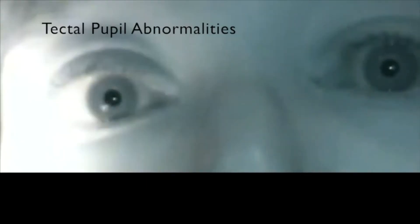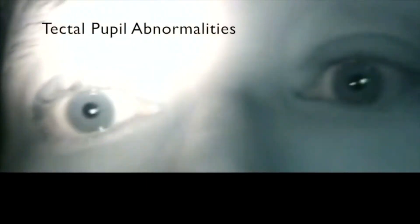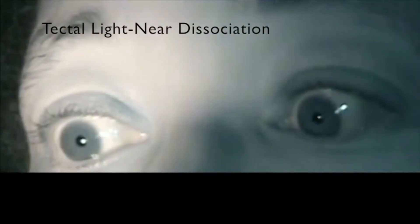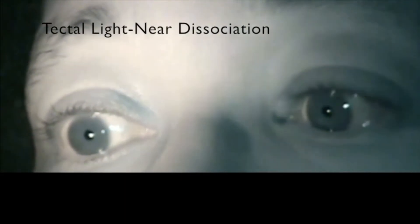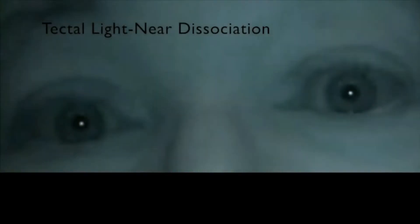If the lesion is restricted to the dorsal midbrain, sparing the tegmental midbrain, the pupils may constrict incompletely to direct light and will constrict more completely to a visual target placed near the eye. This phenomenon is called tectal light-near dissociation. It occurs because cerebral signals that drive pupil constriction to a near target are believed to reach the Edinger-Westphal nucleus through a ventral pathway that bypasses the dorsal midbrain.